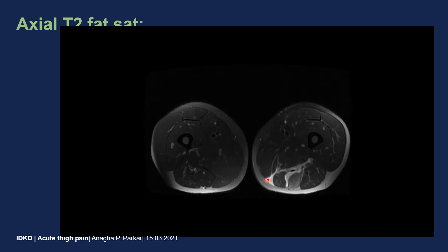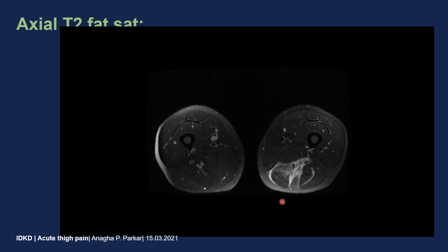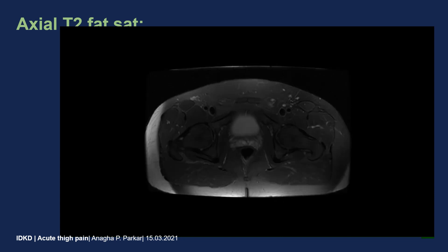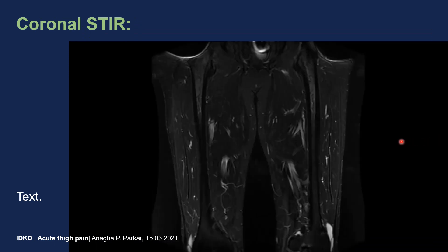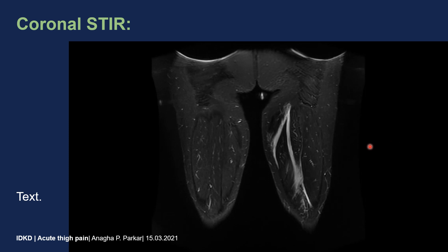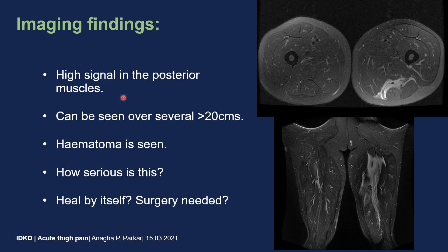There is also some hematoma. Then there's the coronal series. We see high signal in the posterior part of the muscles, and this can be seen over a long area — more than 20 centimeters. We do see a slight hematoma.